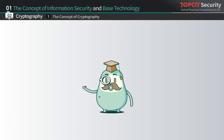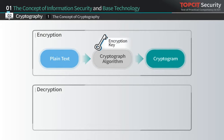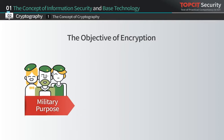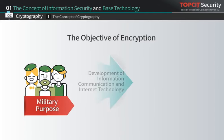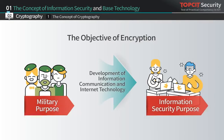Let's take a look at cryptography, the base technology of information security. Encryption is a process of converting plain text into a form where an unauthorized third party is unable to recognize the information, and decryption is the opposite process, where the converted cryptogram is restored back to plain text. Encryption was first used for military purposes, but thanks to the development of information communication and internet technology, it is now used to protect various significant information.